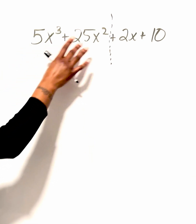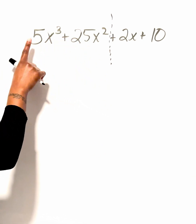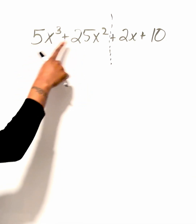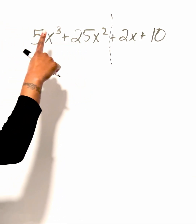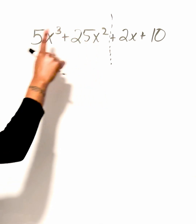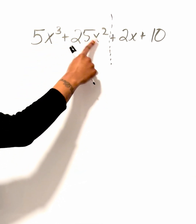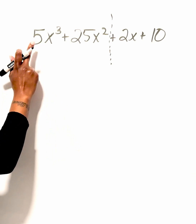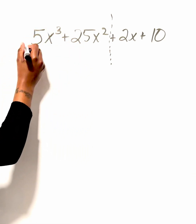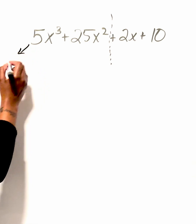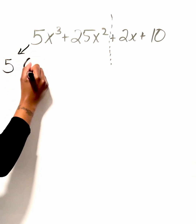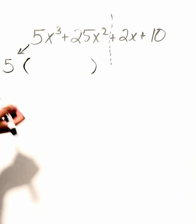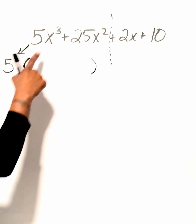First, check that both terms have the same element. You see how this has a 5 and this has a 25 — since they both have numbers, I can factor out a number. We have x cubed and x squared, so they both have x's, meaning I can factor out an x. The GCF between 5 and 25 is 5, so I'm going to bring that 5 to the front and create my parentheses.